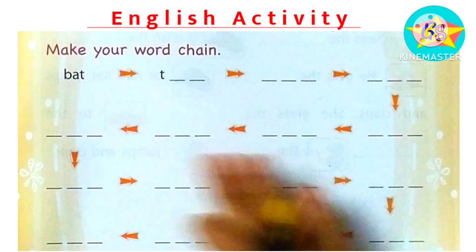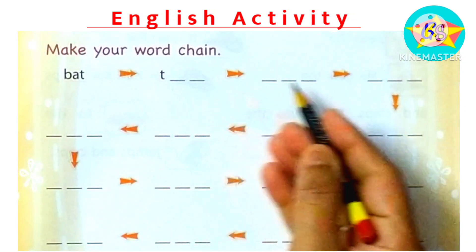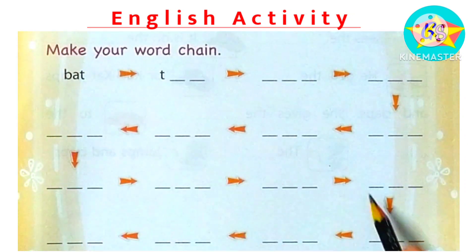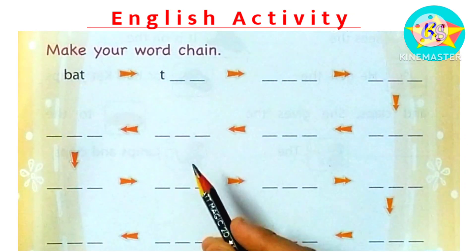It's called word chain. You can see here there are some arrows. We have to follow these arrows. But what do we need to do in this activity?